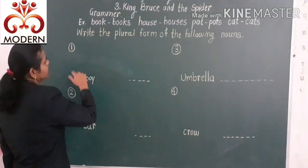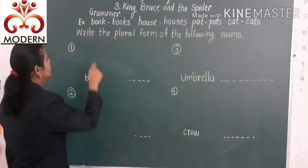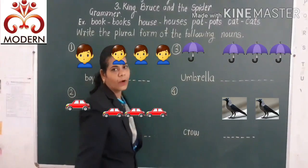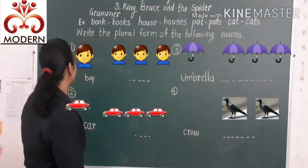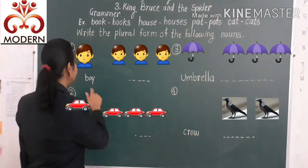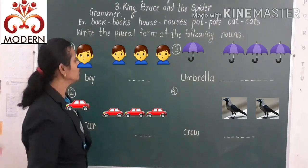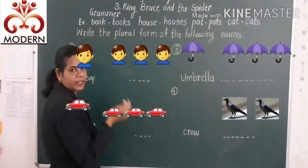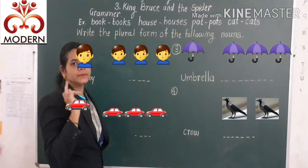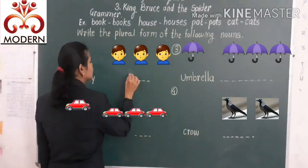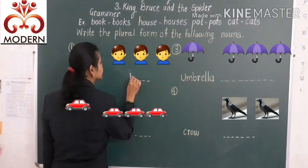Write the plural form of the following nouns. Here, 'boy' is a noun. When more than one, we add 's' to the common noun. So, write here: boys. Boy — boys.